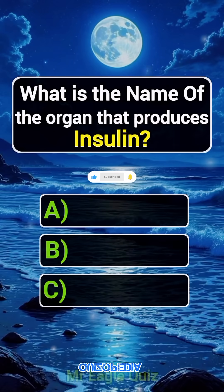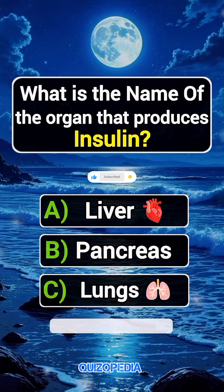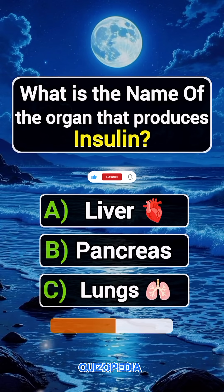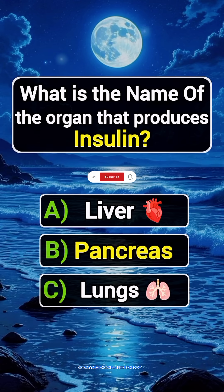Question 2. What is the name of the organ that produces insulin? Answer B. Pancreas.